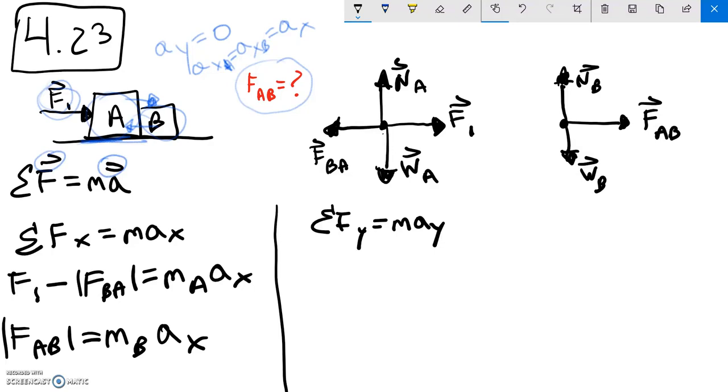magnitude of F_AB must be equal to m_B, the mass of B, times a_x. And then with sum of forces in the y, I will get that N_A minus m_A g is equal to zero and N_B minus m_B g is equal to zero.